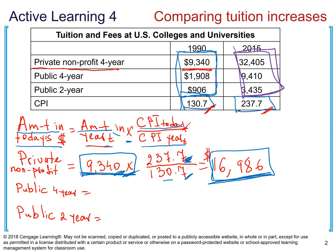This amount in 2015 dollars equals $16,986. So if we take inflation into consideration over this range of years, a student in 2015 should have paid $16,986 for a private non-profit four-year college. But how much are students in those colleges actually paying? $32,405. So who is paying more — students in 1990 or students in 2015? Students in 2015, because transferring the 1990 amount gives only $16,986, but reality in 2015 is $32,405.